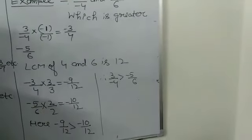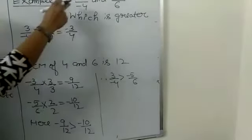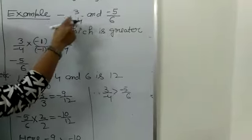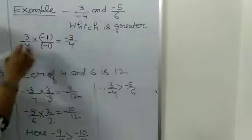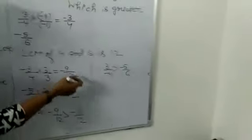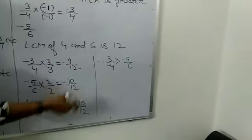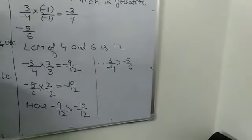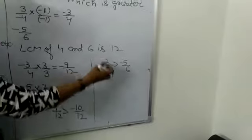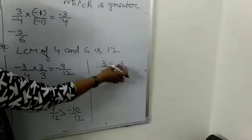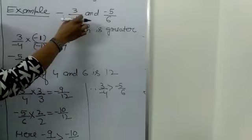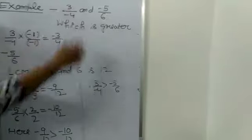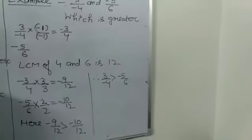So the rule says: first, convert the rational number into its standard form, then take the LCM of the denominators and compare as you would for fractions. If we don't convert the rational number into its standard form first, the answer will come out wrong.